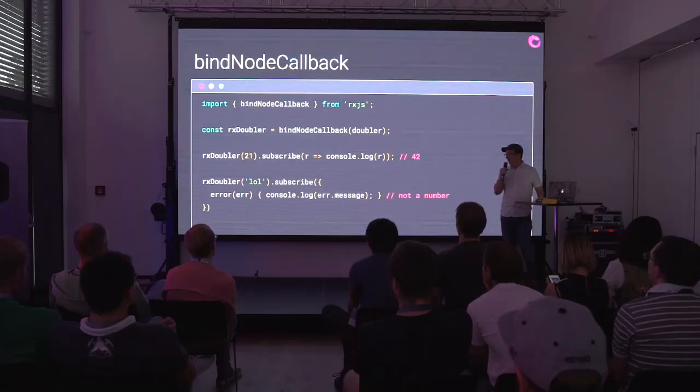Here we've got a doubler function that says if this is a number, call the callback with an error, otherwise call it with null and the doubled value. If I wanted to use bindNodeCallback from RxJS on that, I just call bindNodeCallback with that function and it wraps it in a new function that, when called, returns an observable that gets the values out or gets the error.